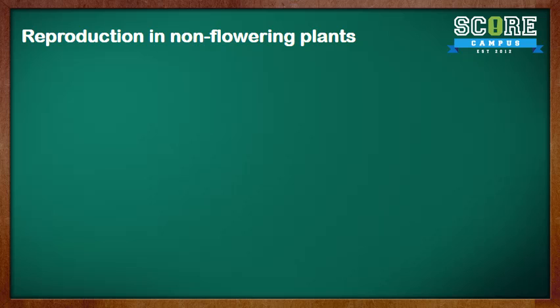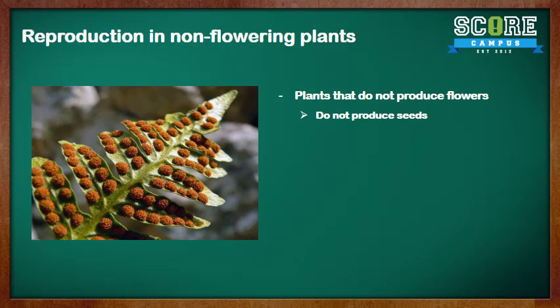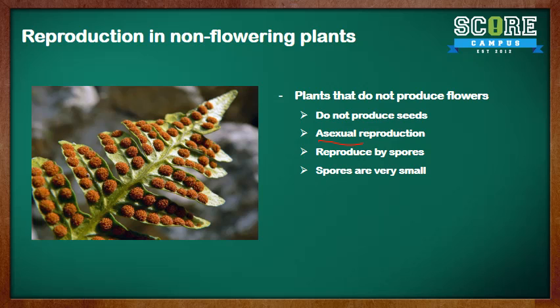Now let's look at reproduction in non-flowering plants. Non-flowering plants are plants that do not produce flowers — for example, the bird's nest fern. Because they do not produce seeds, they undergo asexual reproduction. They produce spores which grow into new plants. Spores are very small and are found on the underside of a leaf. Once the spore bags are ripe, spores are dispersed and can grow into a new plant. That is how they reproduce.